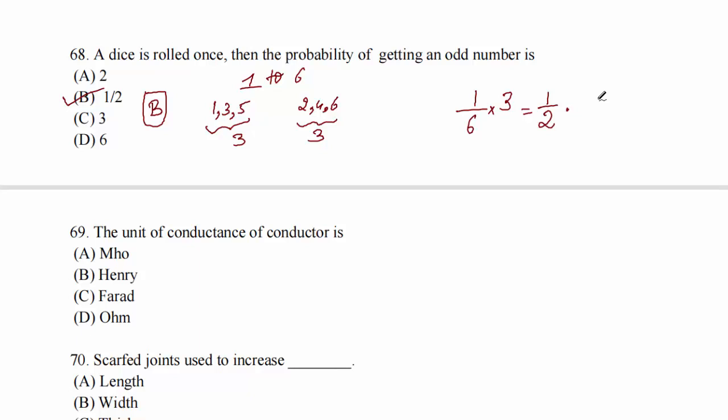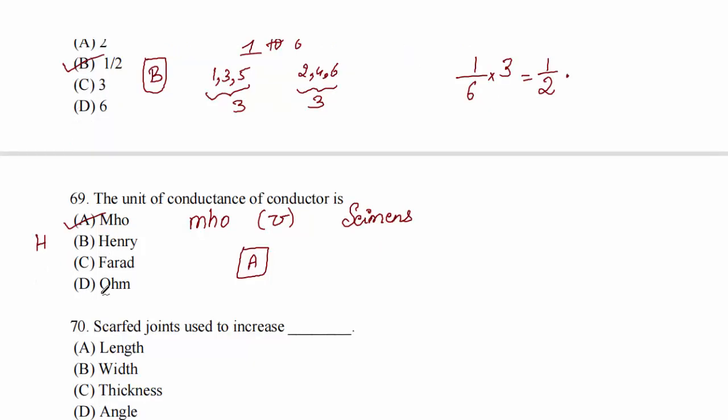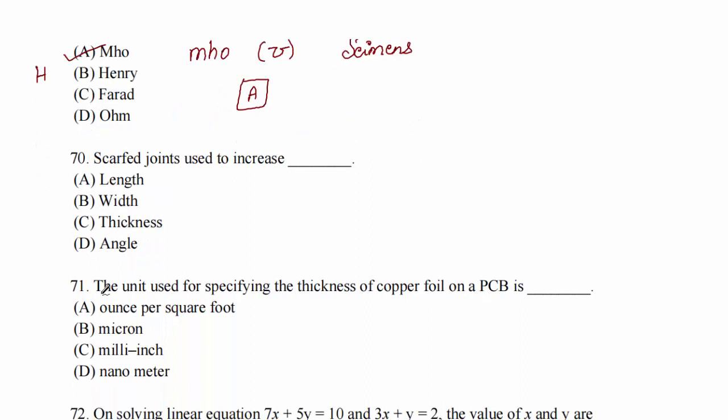Question 69: the unit of conductance of a conductor is mho. Strictly speaking, mho is correct, though the symbol is siemens now. Option A. Question 71: the unit used for specifying the thickness of copper foil on a printed circuit board is ounce per square foot. Option A.